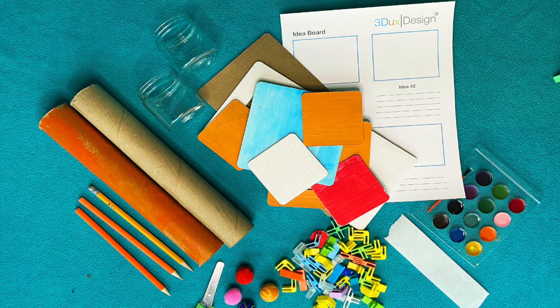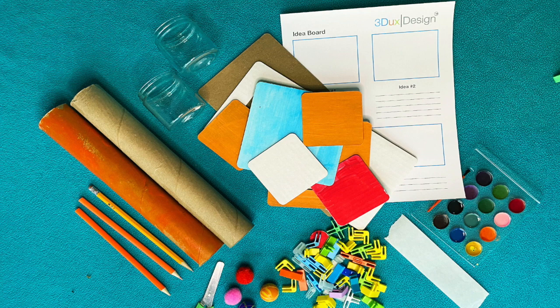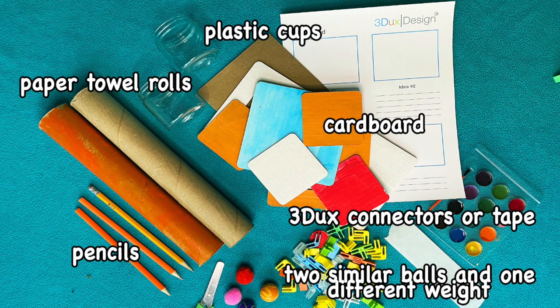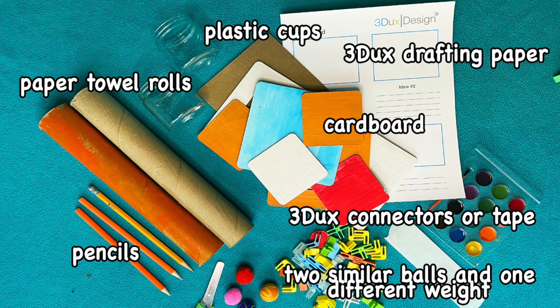Now it's time for us to get started. Here are the materials that you're going to need. Paper towel rolls, cardboard, plastic cups and pencils, 3DUX connectors. You'll also want to gather a few different rolling objects, like bouncy balls, or other round objects that will fit in your paper towel tube. And lastly, you'll want some drafting paper.